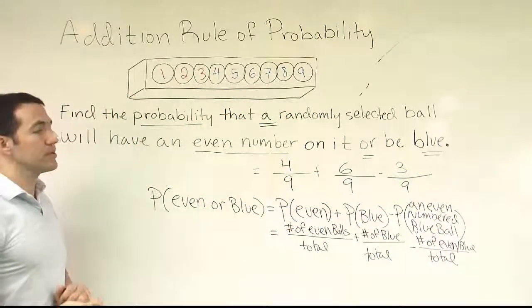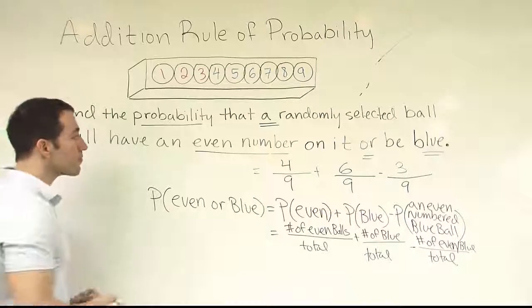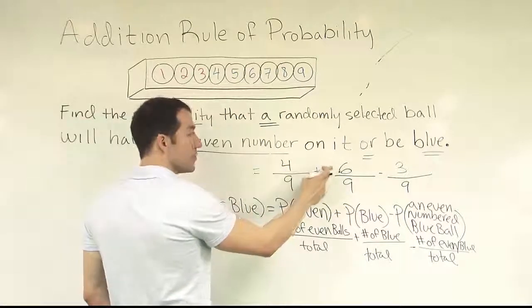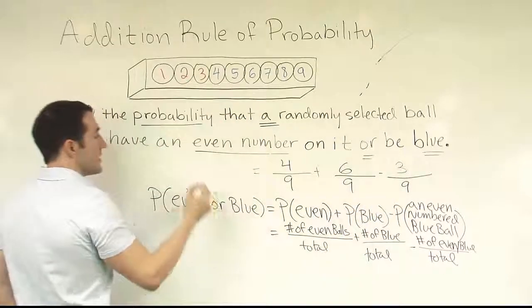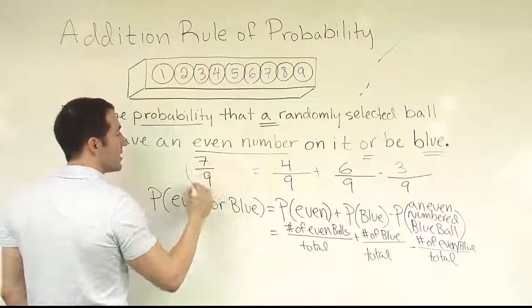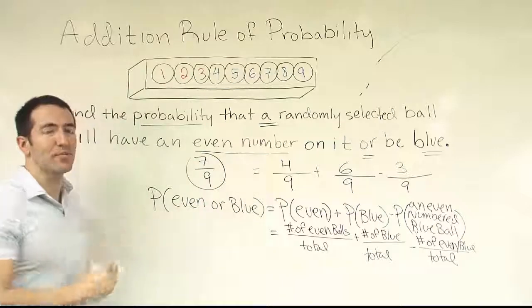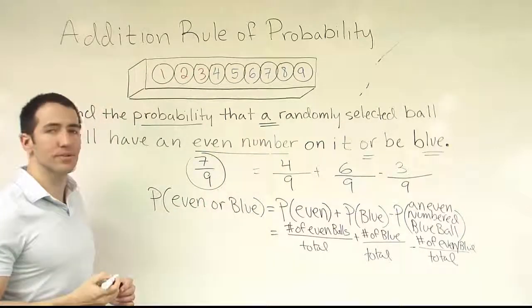And then from there, we just do the arithmetic to finish the problem. Four plus six, of course, makes ten. Ten take away three is seven. The answer becomes seven-ninths as a fraction or 0.7 repeating as a decimal. And that's your solution.